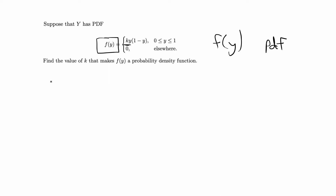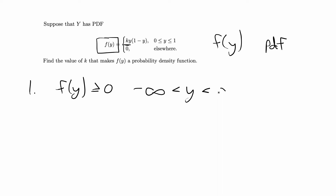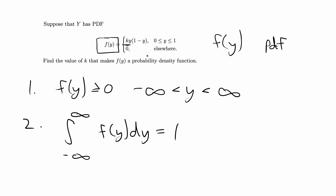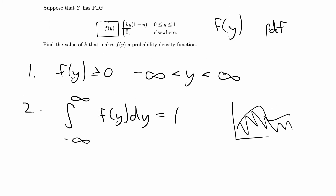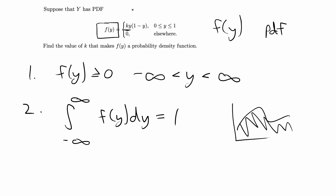So to be defined as a probability density function, there are two conditions that must be met. First, f of y has to be greater than or equal to 0 for all y — so from negative infinity to infinity, the function must be non-negative. Second, the integral from negative infinity to infinity of f of y dy has to equal 1, meaning the area under the curve of the function must equal 1. Let's check these two conditions for this function and determine which value of k satisfies them.